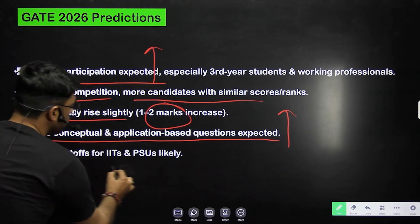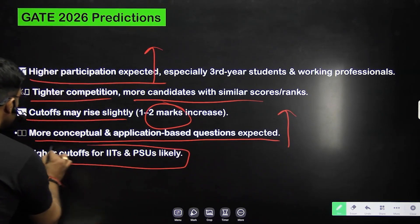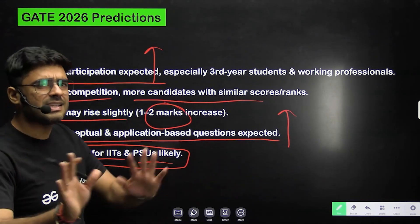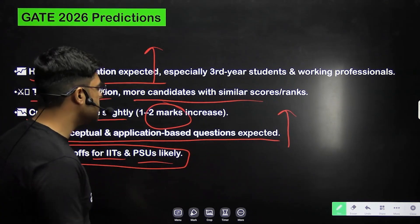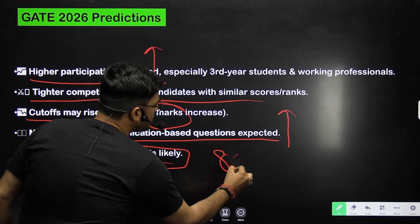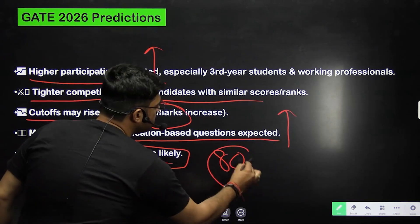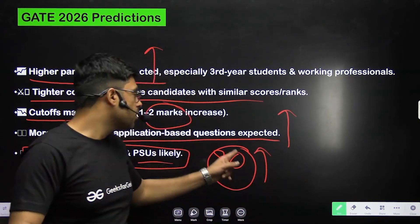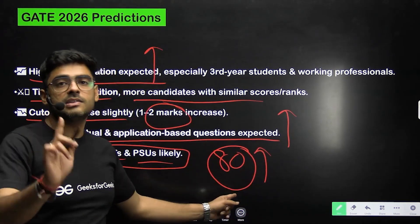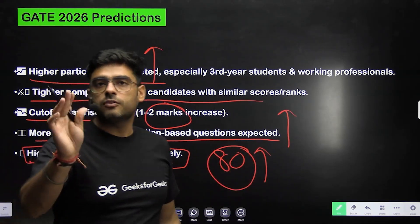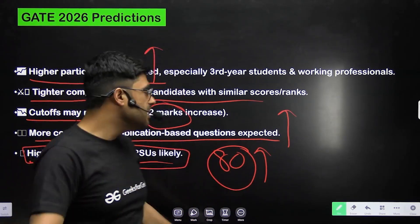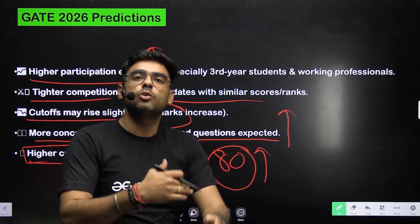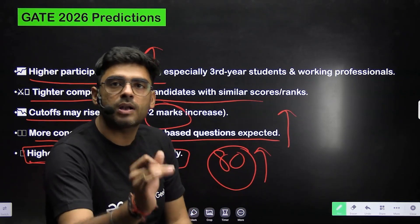Higher cutoffs are expected for IIT and PSU admissions. On a safer side, aim for 80 marks or above as your raw marks — if you achieve this, your place is secured with any good PSU or IIT.